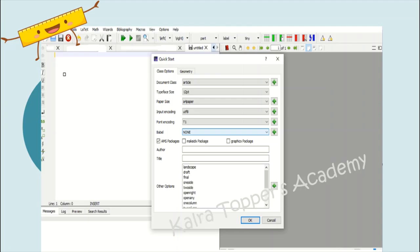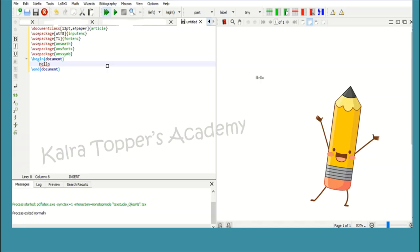After you click on quick start, you can see this dialog box will appear and this provides all the basic information you need in your document like document class. By default it is article. If you want to change it to book, notice, or letter you can change it. Default text size is 12 points and you can click on AMS packages as well.